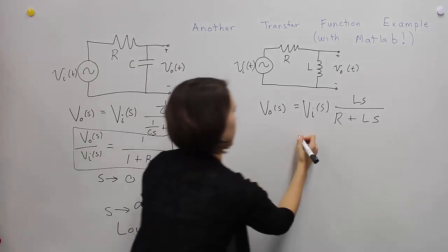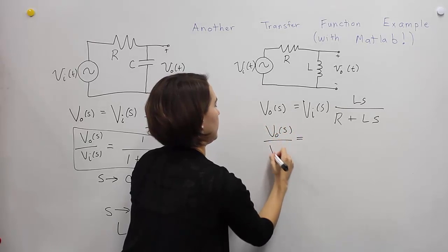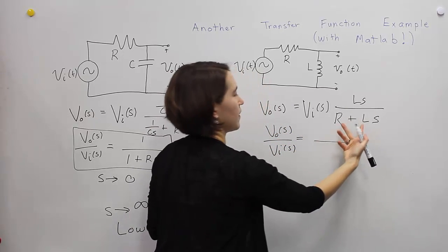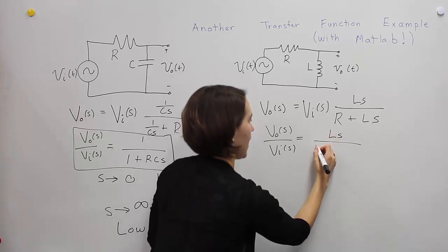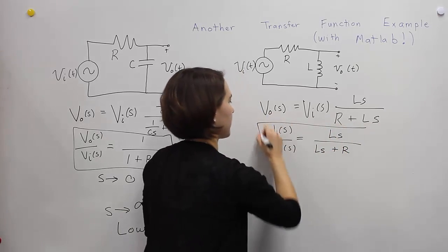And actually, we're going to do it here. V out over S, V in over S. And we're just going to flip these around to put this in Ls first, plus R. And this is going to be our transfer function for that.